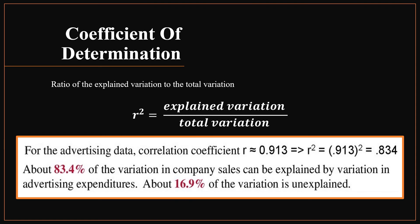For the advertising data, the correlation coefficient r was 0.913. To find the coefficient of determination, square 0.913, which gives 0.834. This means that about 83.4% of the variation in company sales can be explained by variation in advertising expenditure. About 16.9% of the variation is unexplained.